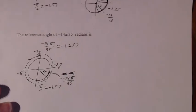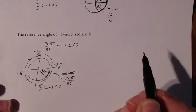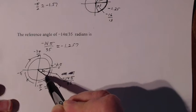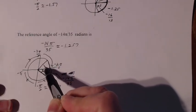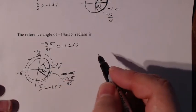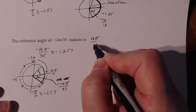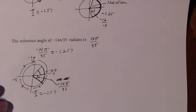Now figuring out the reference angle: I want the acute angle with the same measurement. The angle looks acute but it's negative, so I want that same angle reflected into the first quadrant. To make it positive, just put a positive symbol in front. So 14π over 35 will be the reference angle. Let me know if anyone has any questions.